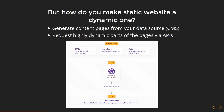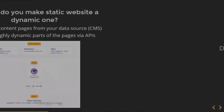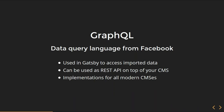But how do you make a static website a dynamic one? You generate your content pages from your data source — in our case, Drupal. You can also do some personalizations by calling different kinds of APIs. For example, if you need to customize some block based on user data, you have to authenticate the user first and then request the dynamic part. Gatsby uses GraphQL, a data query language from Facebook. It's used to access imported data from Drupal, and it can also be used as a REST API sitting on top of your CMS.